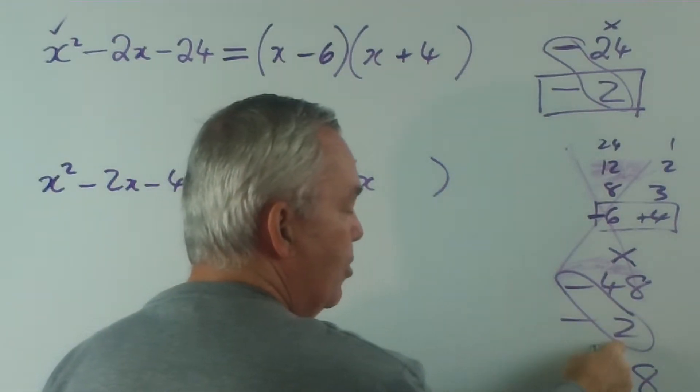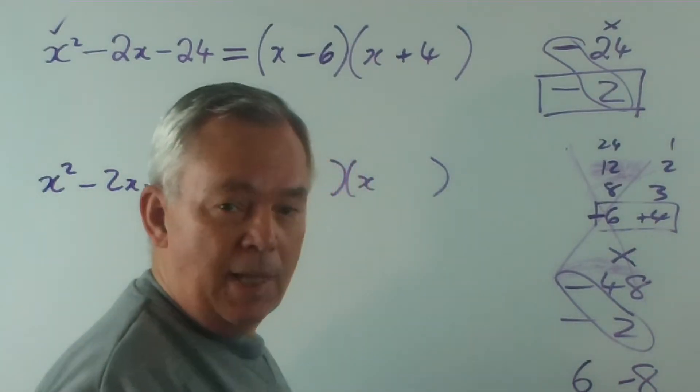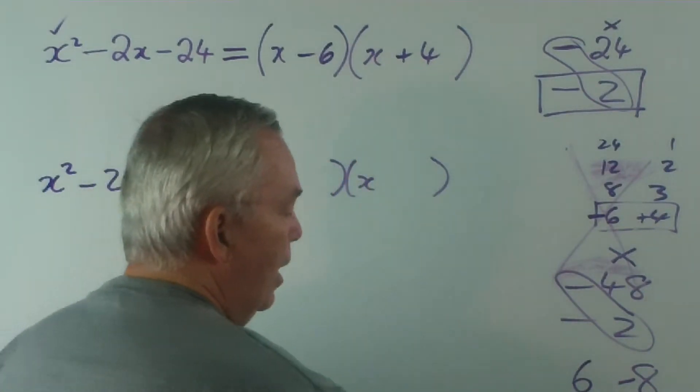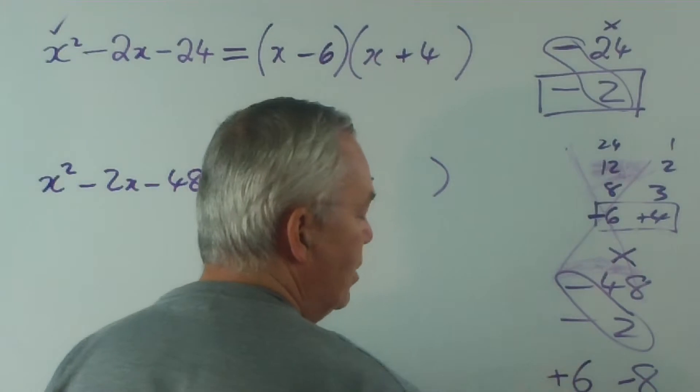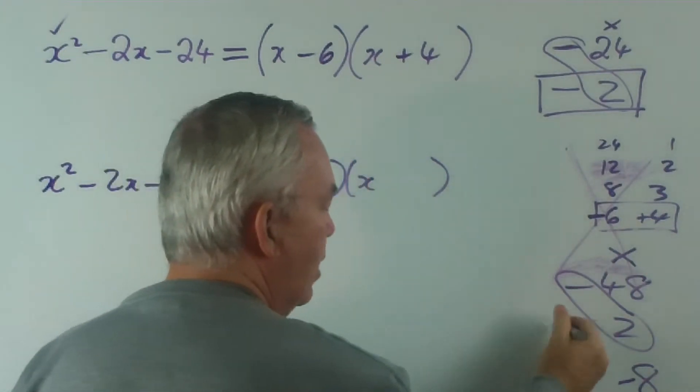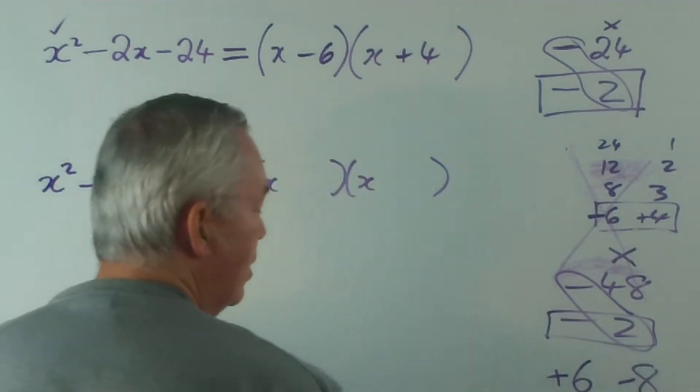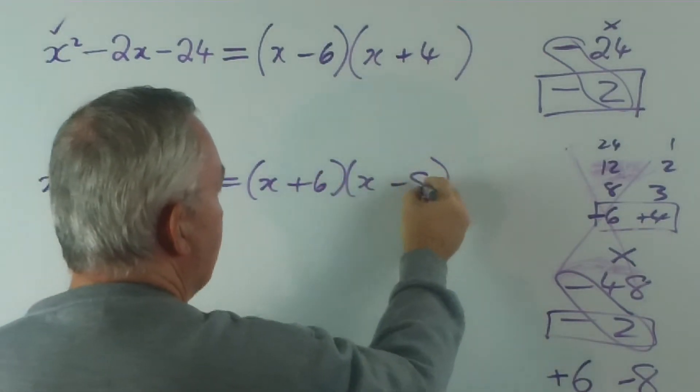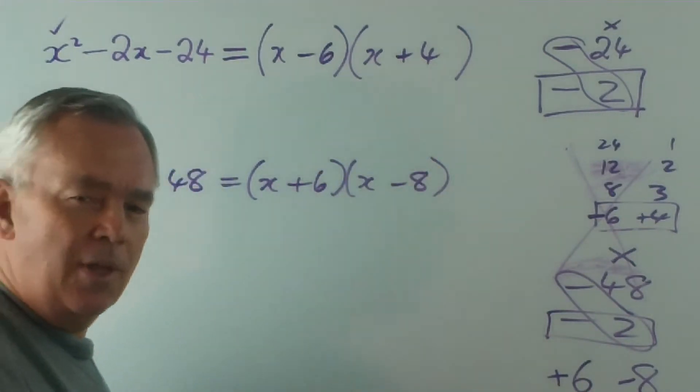How do I get minus 2? Well, the big number has to be negative to get us down into the negatives. And if I start at minus 8, I have to come up 6 to get to minus 2. So that's my combination, plus 6, minus 8. Do you like it?